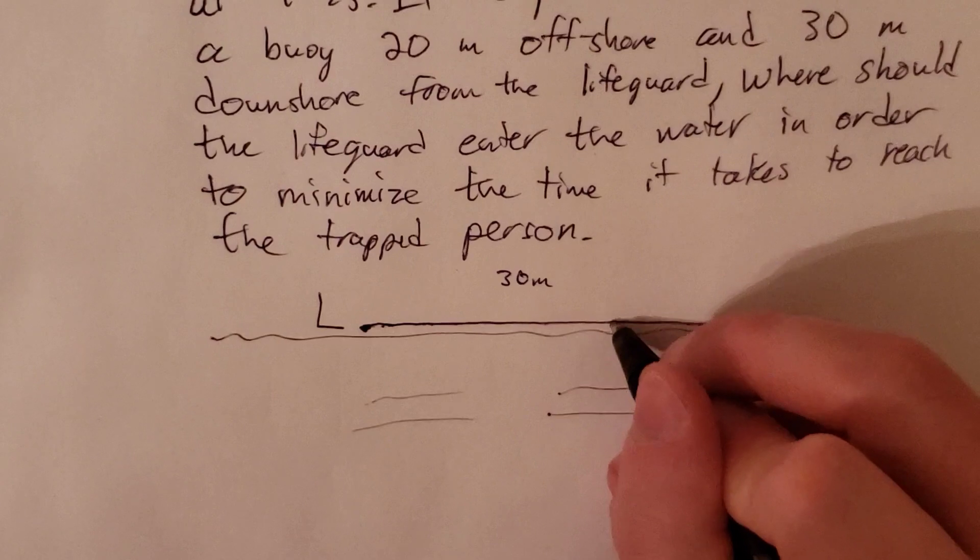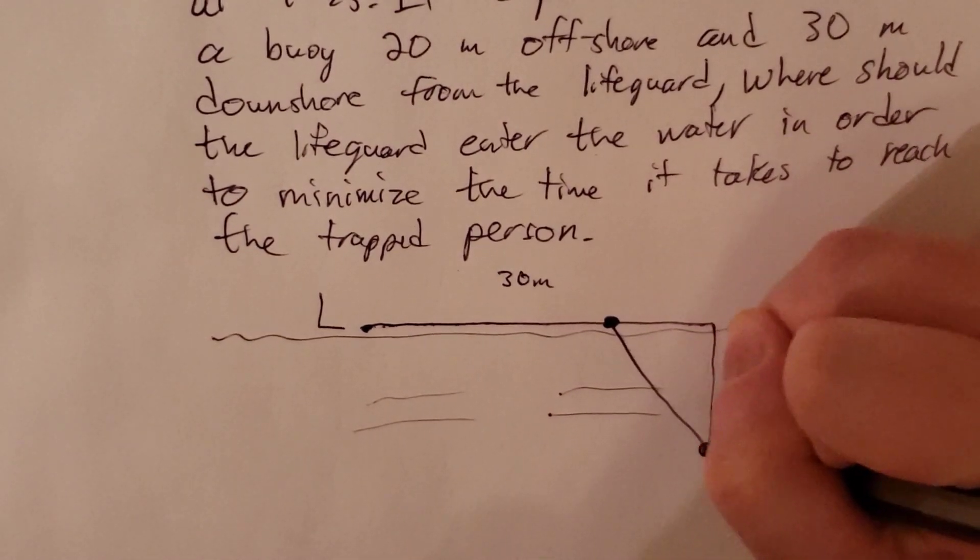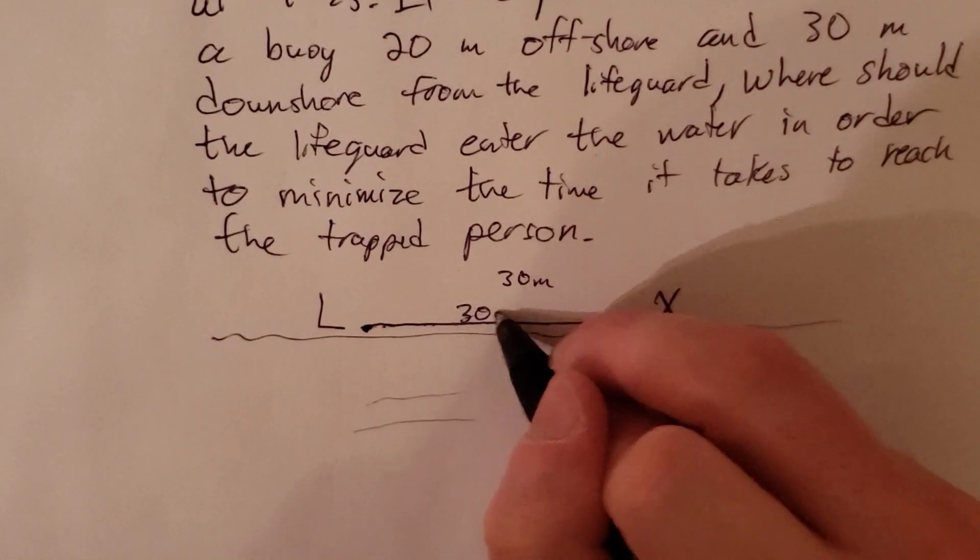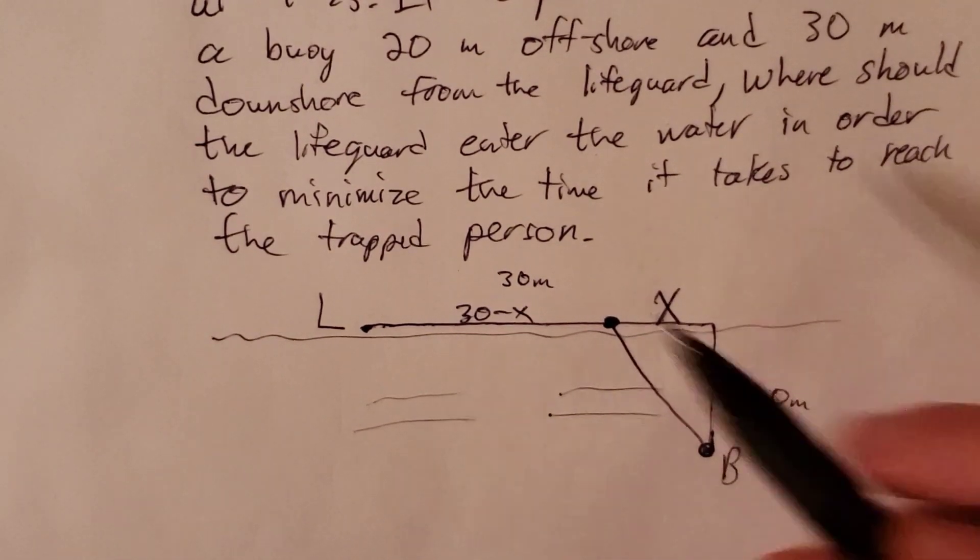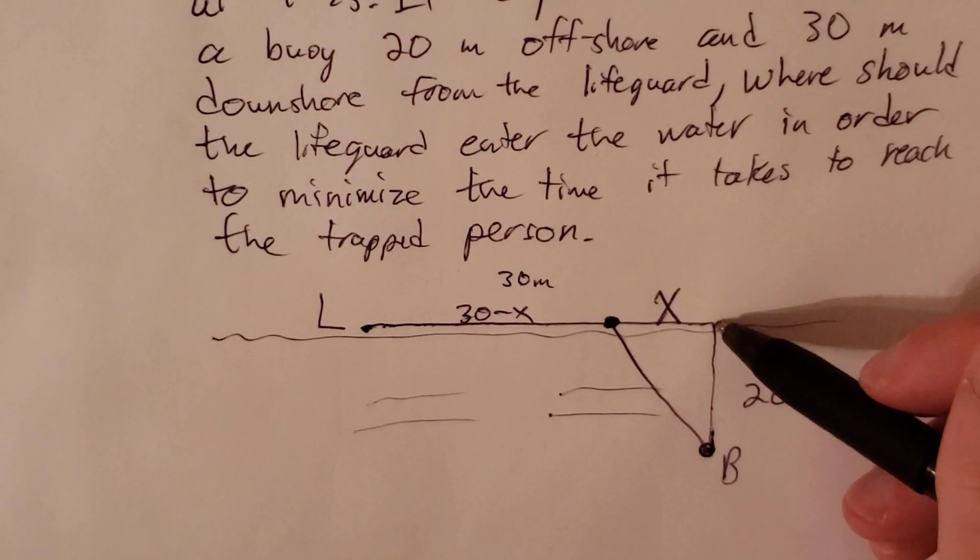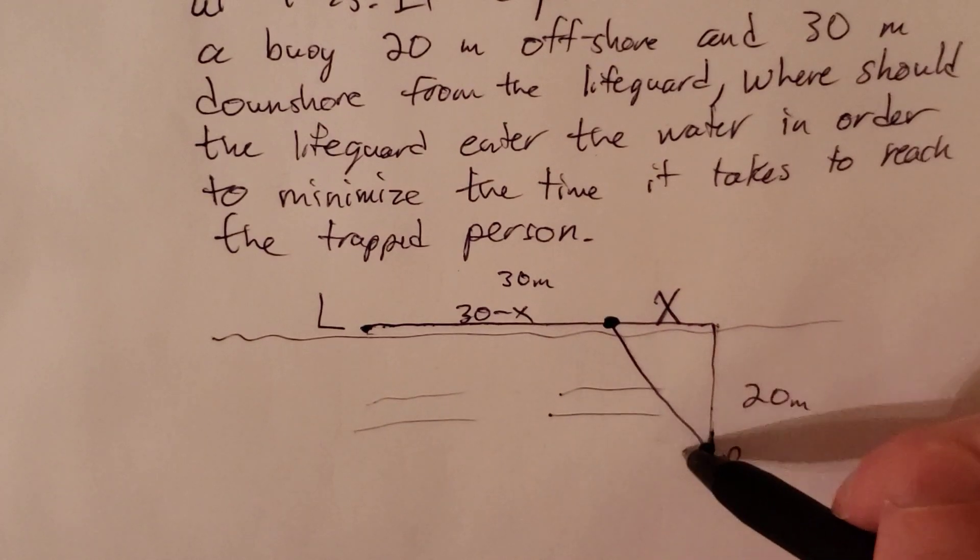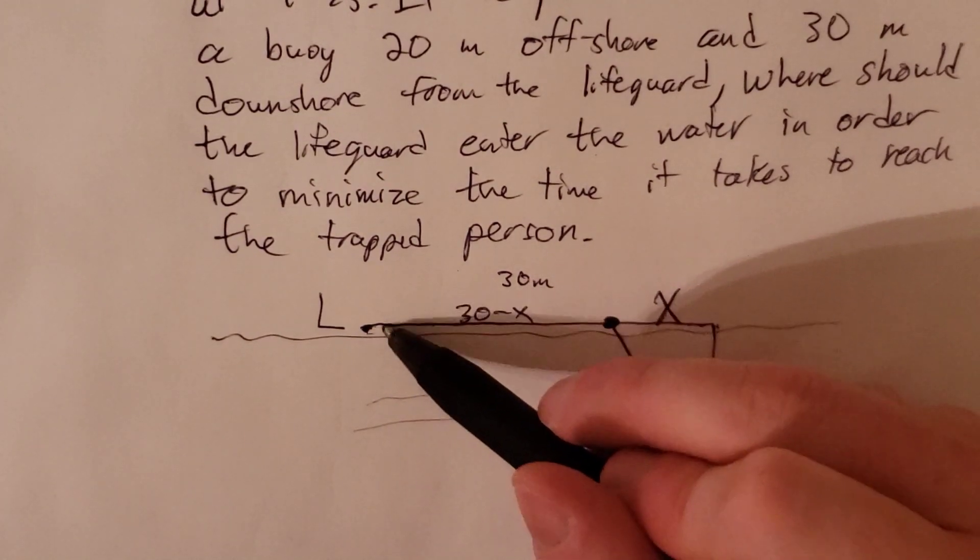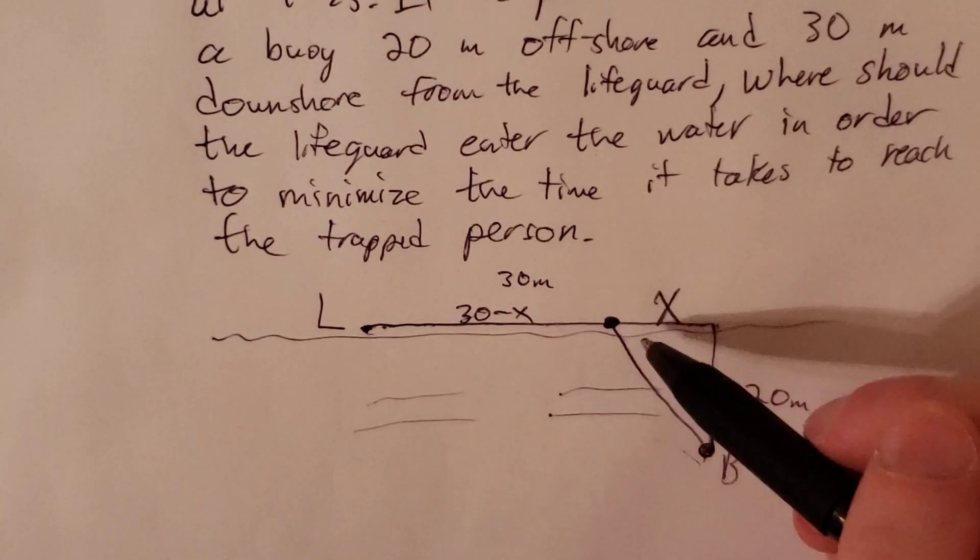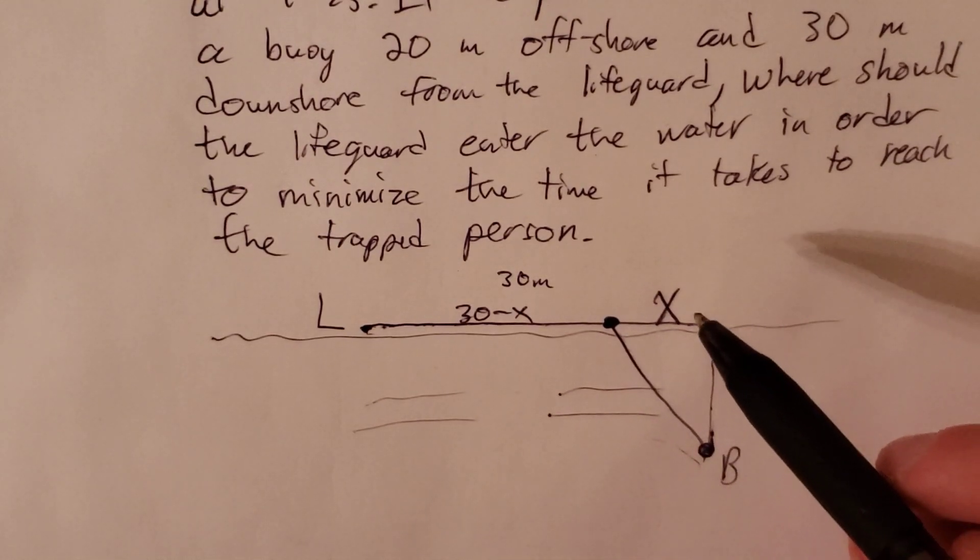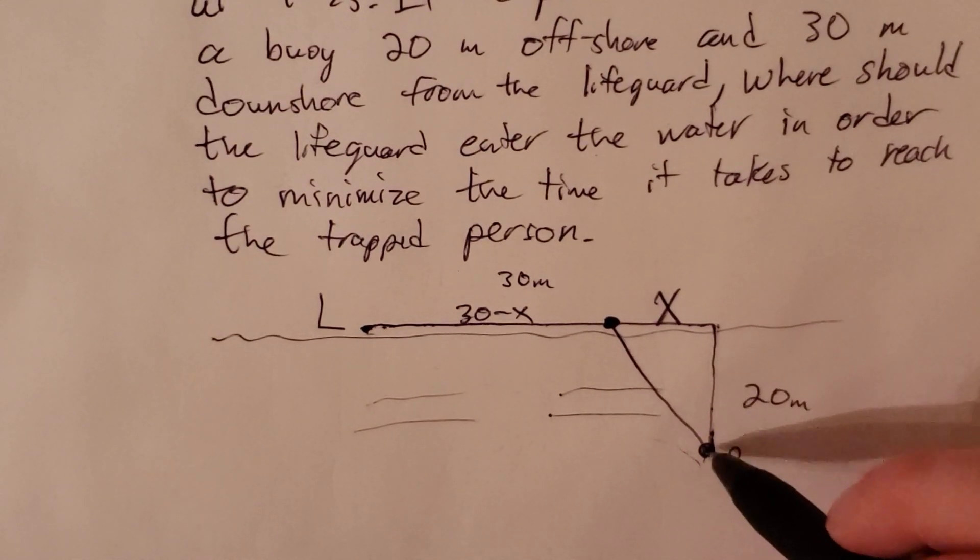We want to know where along the beach the lifeguard should enter the water in order to minimize the time it takes for the lifeguard to get to this person. They could have run along the beach for 30 meters and then swim out for 20 meters. They could just directly start swimming here or they could go to some point in between and then start swimming. So where would it be in between here where they would minimize the time it takes to get to this person at the buoy?